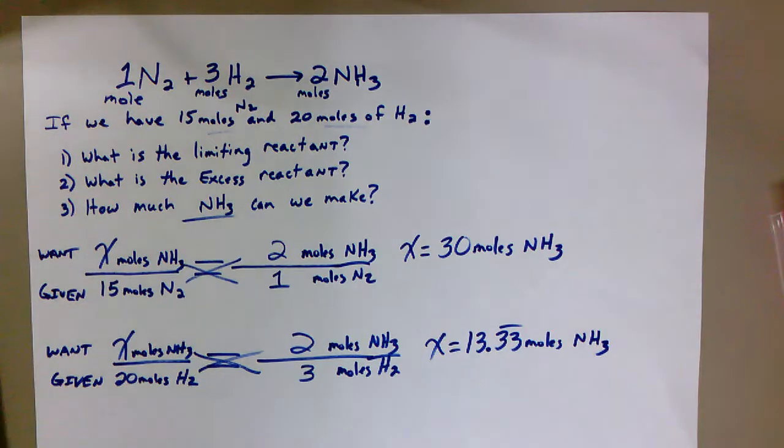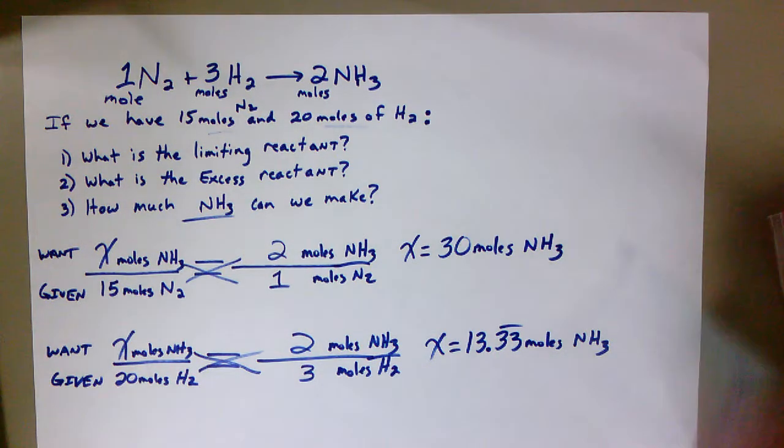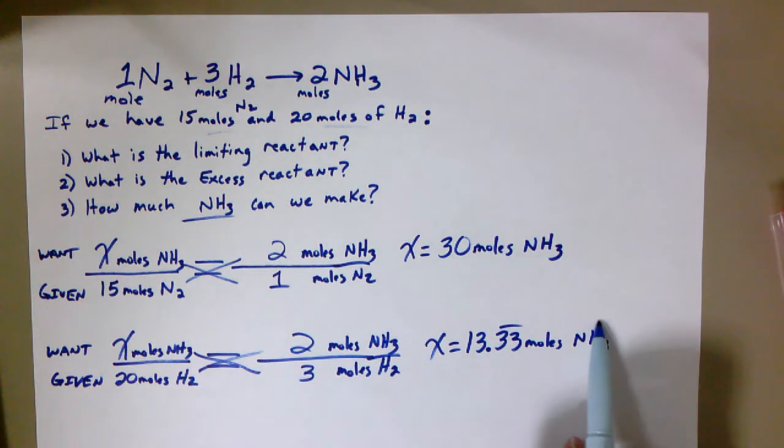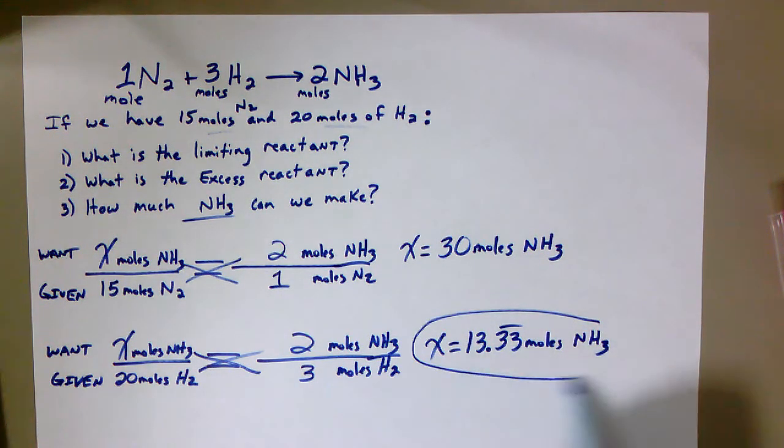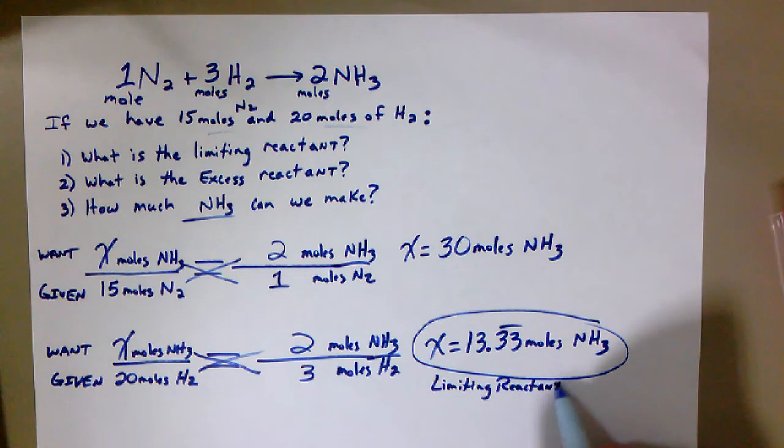So now we've got to take that step back and we've got to say, okay, what did we just find there? Well, this is saying if, again the keyword if, all 20 moles of H2 were used, it is enough to make 13.33 moles of NH3. So the question then is what is our answer for these? The limiting reactant, remember, is always the one that creates the lowest amount of product. So this is saying that our limiting reactant, it's not actually the NH3, it's actually the H2. The H2 only has enough to make 13.33 moles of NH3.